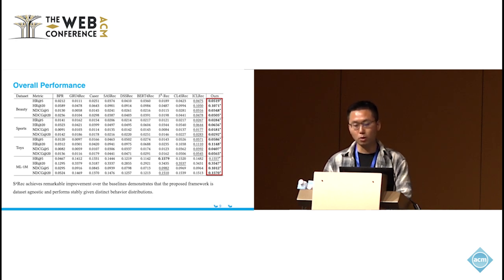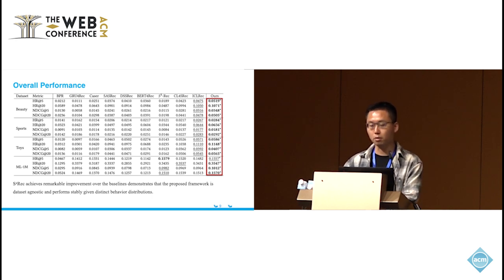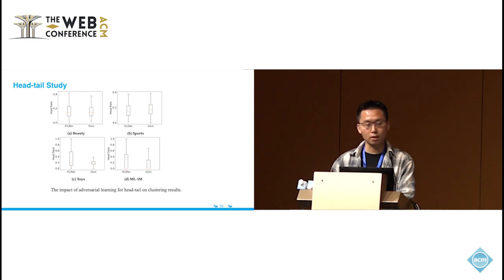This is the overall performance of the proposed method against baselines. Our method achieved improvement over the baselines. We further study the impact of adversarial learning on head-tail clustering results. As the figure presents, our method has more compact box plots on all four datasets than the compared methods. This observation indicates the distribution of head sequences across the clusters generated by our method is more uniform.